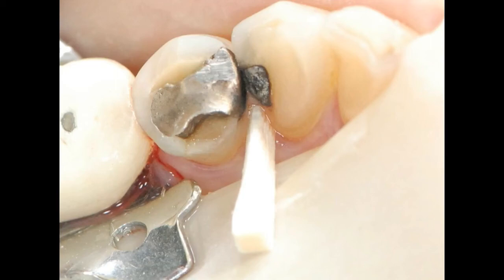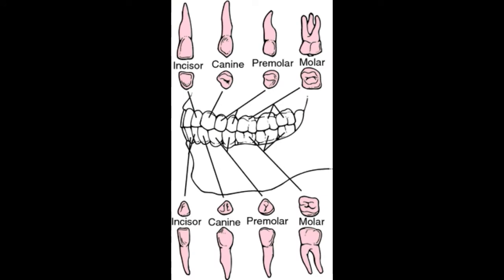The term bicuspid refers to 8 of the 32 permanent teeth. There are no bicuspids in primary teeth, and they grow in to replace primary molars. Two bicuspids are on each side of the upper and lower jaw, behind the canine teeth and in front of the molars. They are also commonly known as premolars, due to their placement in the jaw.